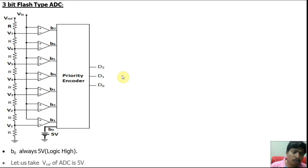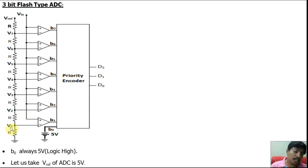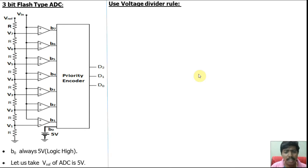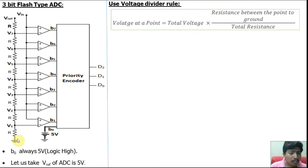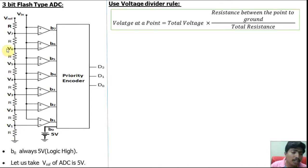The reference voltage for this comparator is 5 volt. First we will find the voltages V1, V2, V3 up to V7. Do you know the voltage divider rule? By using the voltage divider rule we can find V1, V2, V3 up to V7. The voltage divider rule means voltage equals total voltage multiplied by the branch resistance from that point to ground, divided by the total resistance.